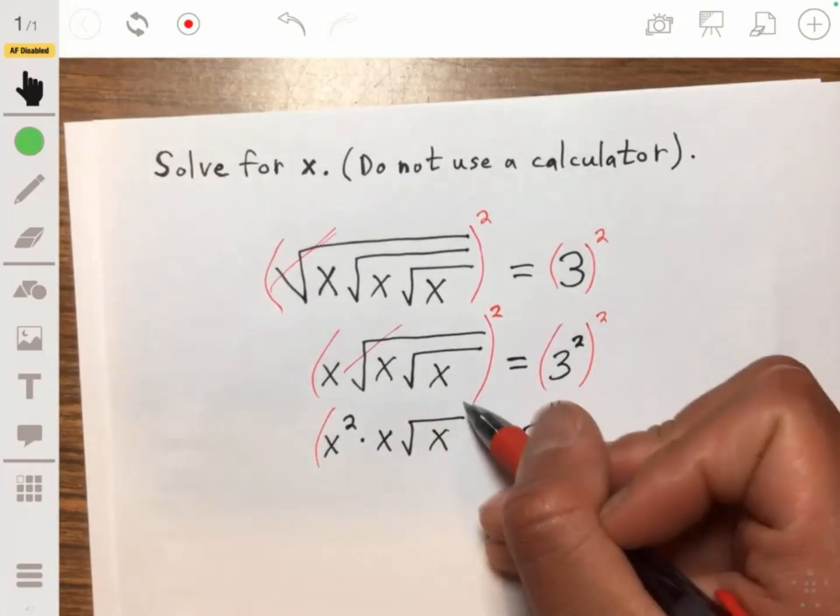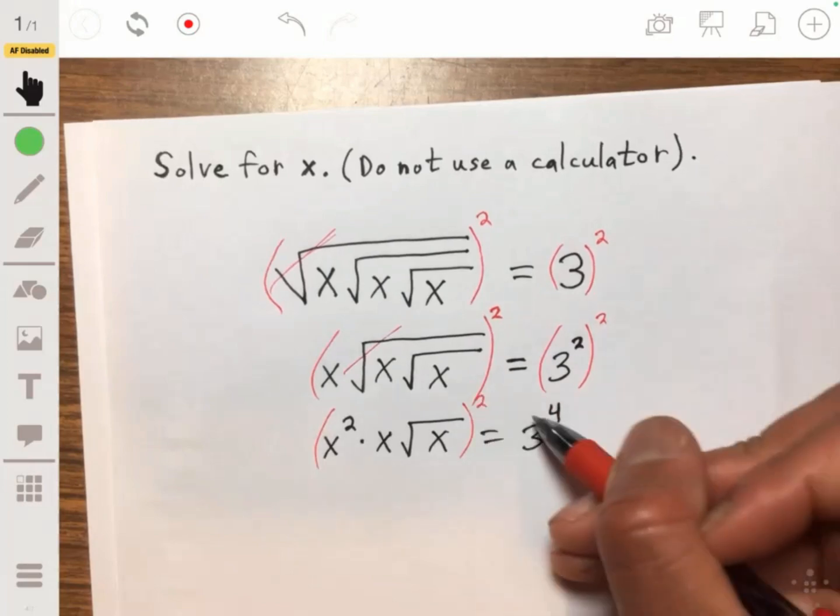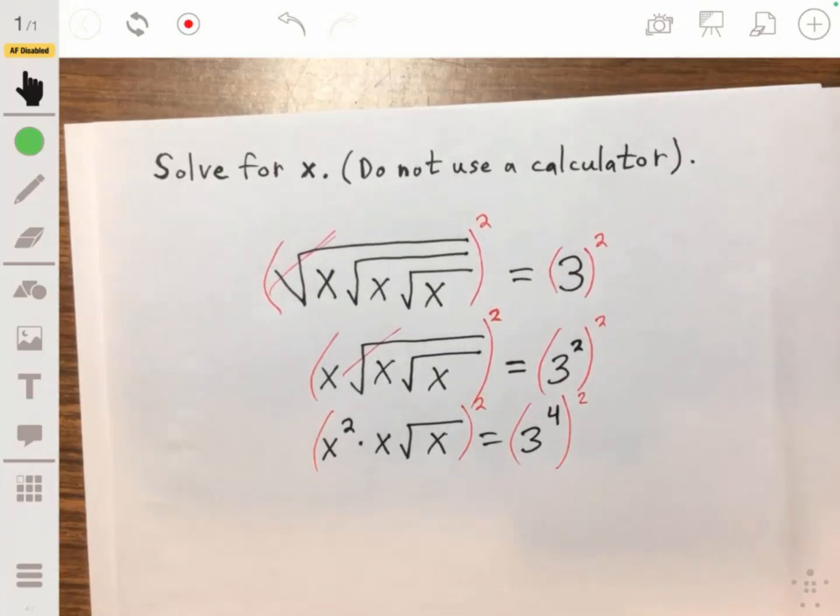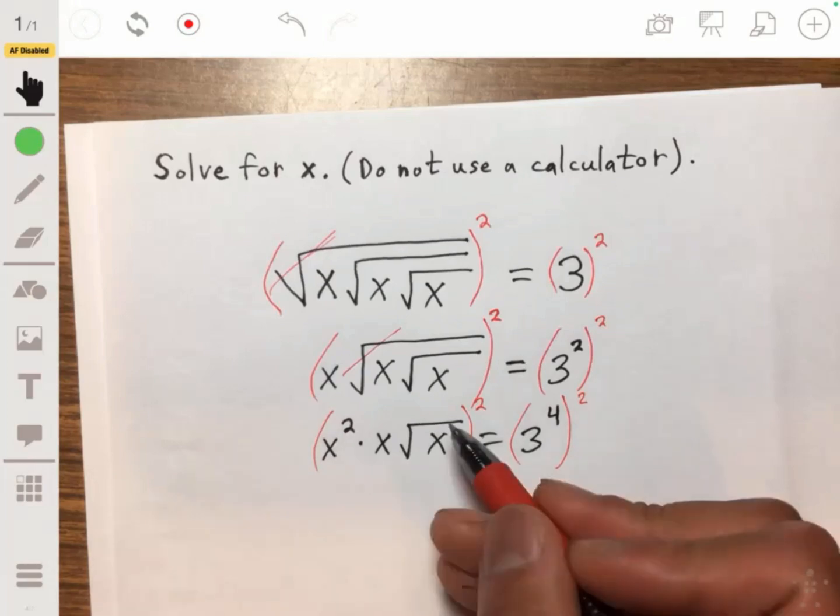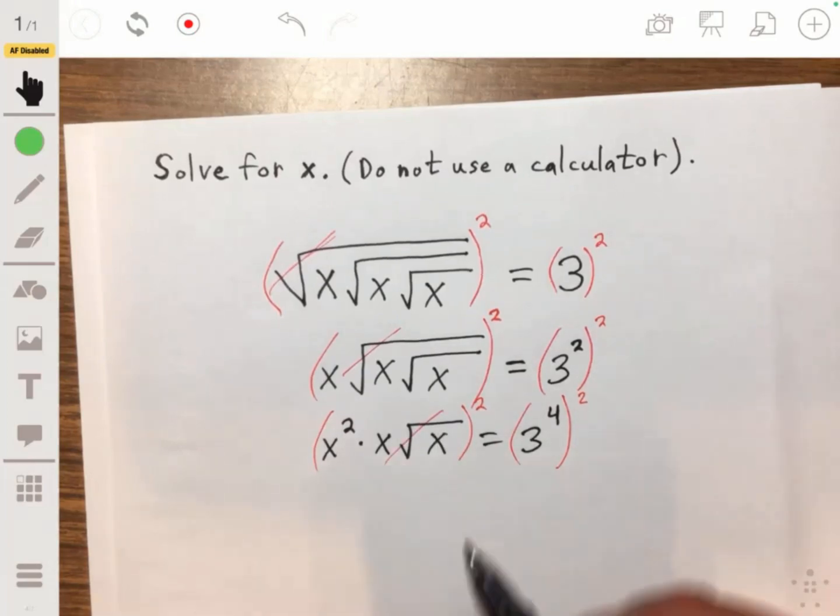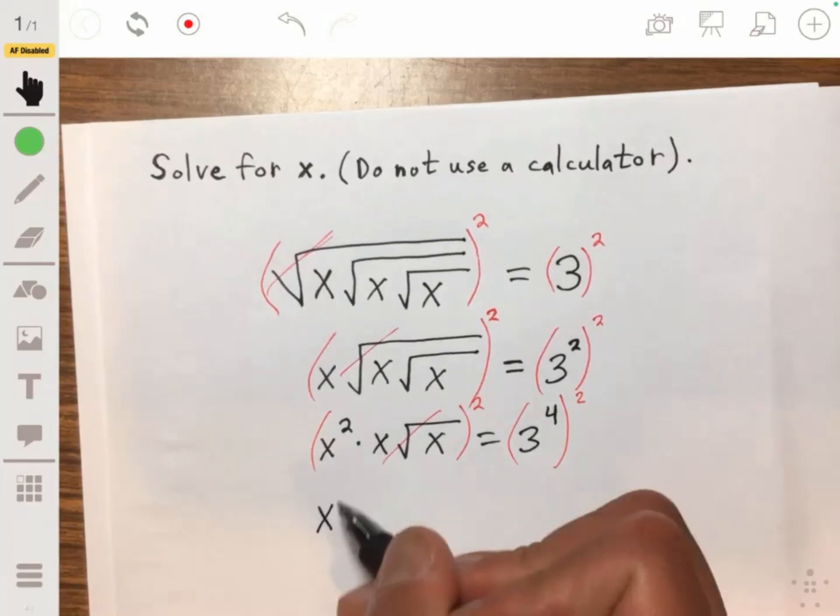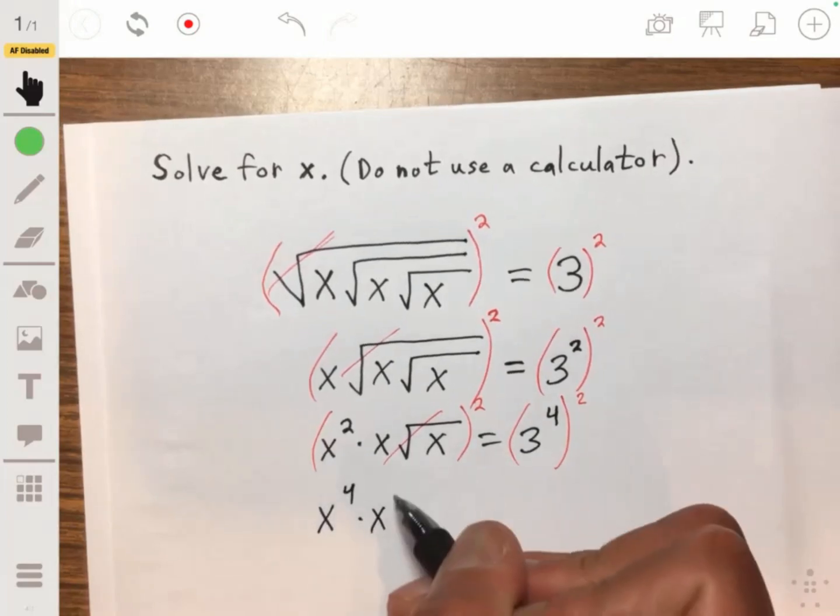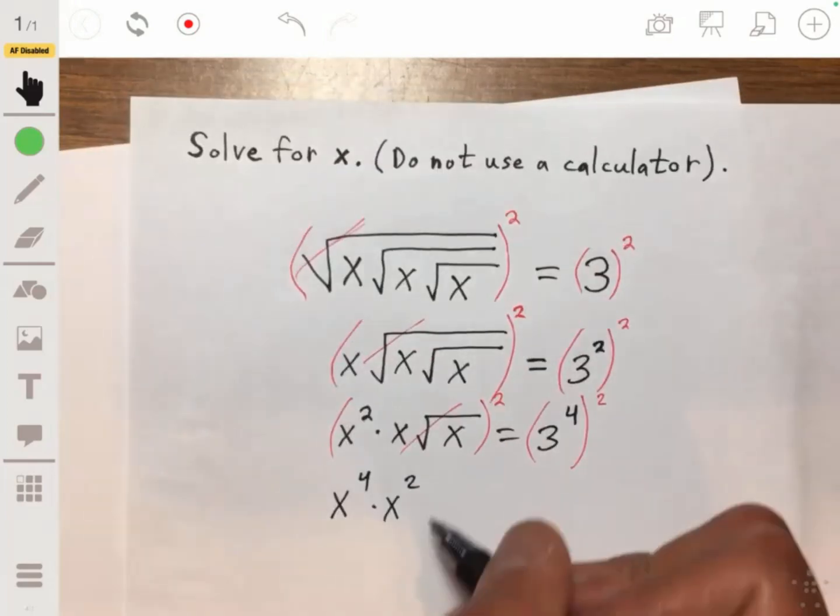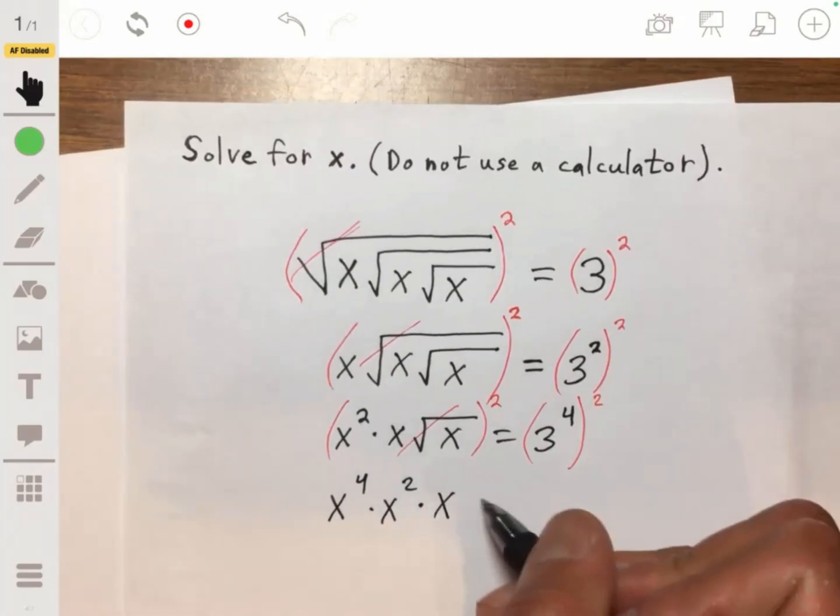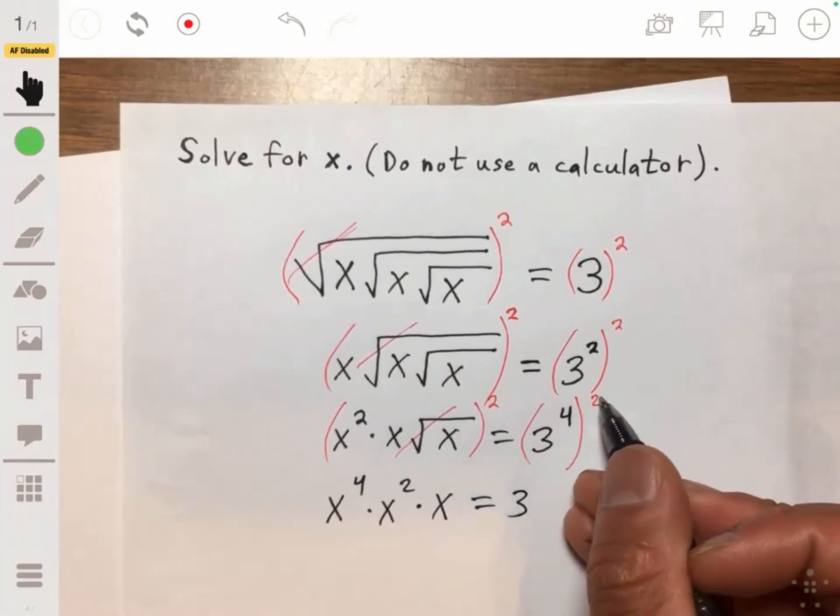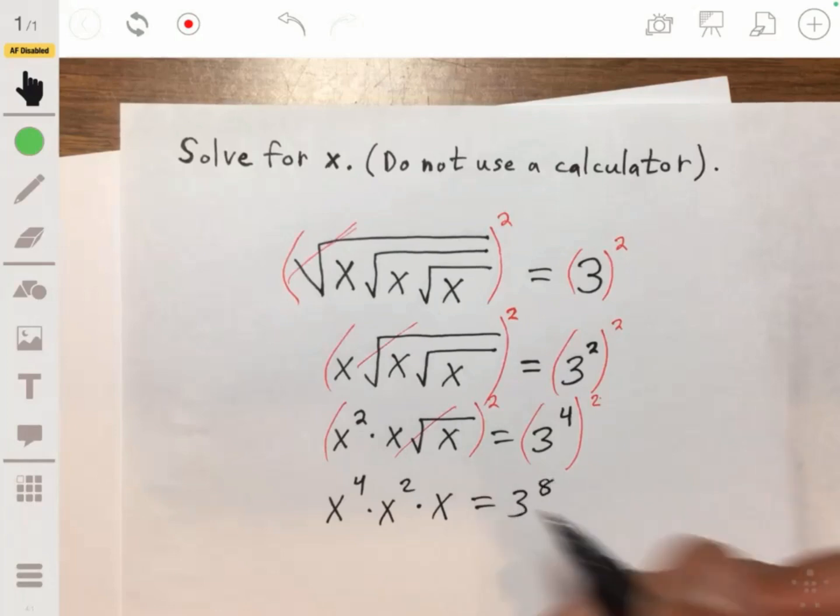Then we're just going to do it one more time. We're going to square both sides one more time. Canceling out the final radical symbol. We're then going to have x squared squared. So we're going to have x to the fourth times x squared times x, which will be equal to 3 to the fourth all to the second. So that'll be 3 to the eighth.